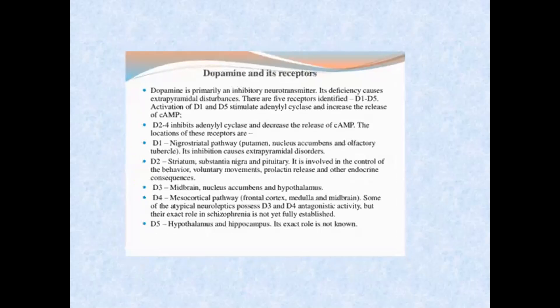Next, you have to know about dopamine. Dopamine is a neurotransmitter that is inhibitory in nature. There are mainly five types of dopamine receptors: D1, D2, D3, D4, and D5. Each has a specific site where dopamine acts.